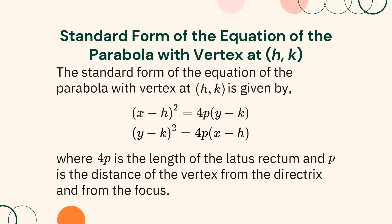This time, let us discuss about parabolas with vertex at h, k. The vertex h, k only means that the vertex is not at the origin. The standard form of the equation of the parabola with vertex at h, k is given by: (x minus h) squared equals 4p(y minus k), or (y minus k) squared equals 4p(x minus h), where 4p is the length of the latus rectum and p is the distance of the vertex from the directrix and from the focus.